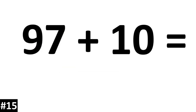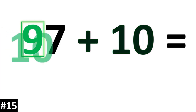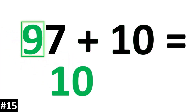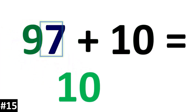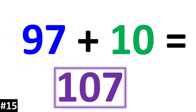97 plus 10: the tens digit of 9 is going to become a 10. The ones digit 7 stays the same. 97 plus 10 is 107.